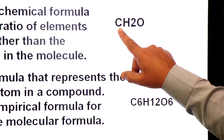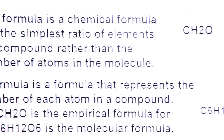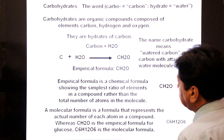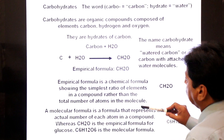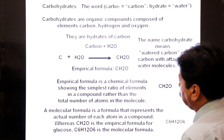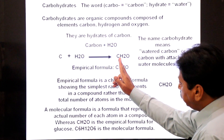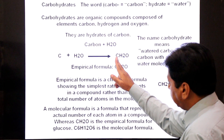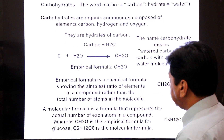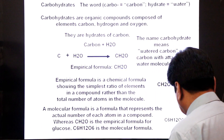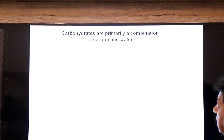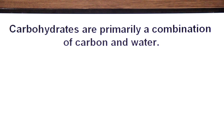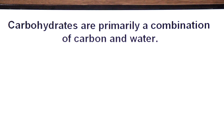For the simplest sugars, the formula is CH2O, meaning they have equal parts of carbon and water. The number of carbon atoms equals the number of water molecules, which is why we call them hydrated carbons. Carbohydrates are primarily a combination of carbon and water with equal parts of each.